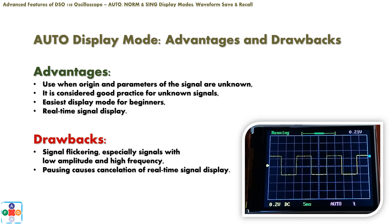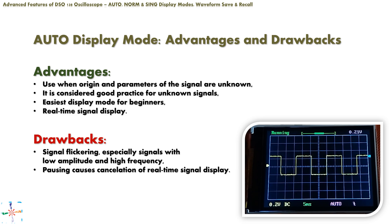To answer the question of when and why we should use this mode of work, we need to take into consideration the input signal itself. If we are not familiar with the origin or parameters of the input signal — such as frequency, period, or amplitude — then setting the oscilloscope in auto display mode would be considered a good practice. By doing so, we will be able to easily center and stabilize the signal display. At this point you might ask: if this display mode is the easiest to work with, why even bother to change it? As with all things in life, none of them are all good news — there are always some drawbacks.